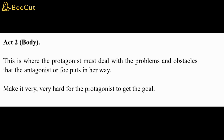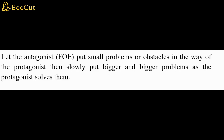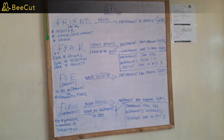Act 2: This is where the protagonist must deal with the problems and obstacles that the antagonist or foe puts in her way. Make it very, very hard for the protagonist to get the goal. Let the antagonist put small problems or obstacles in the way of the protagonist, then slowly put bigger and bigger problems as the protagonist solves them. The protagonist's friend will help her to solve the problems, while the protagonist's flaw will make it hard for her to do so. The antagonist can also use the protagonist's fear and flaw to stop her from getting what she wants.